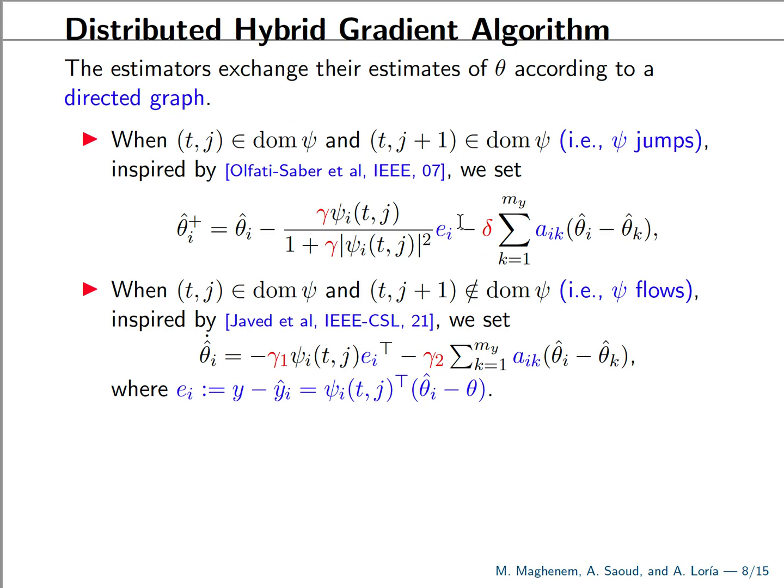So as we said earlier, we have regressors. Now we have network of regressors. They have the same domain. So whenever they jump, we update discreetly and our update law now is composed of two terms. The first term is just the local gradient term that tends to minimize the output errors, plus another term that involves the other agents. So what we call a cooperative term.